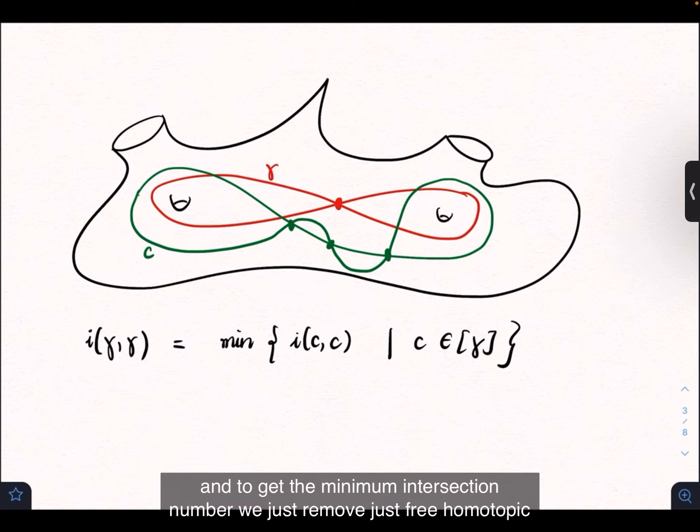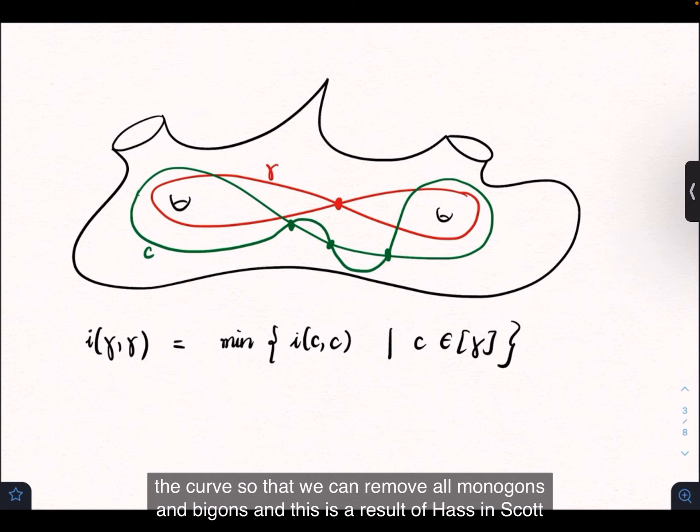To get the minimum intersection number, we free-homotope the curves so that we can remove all monogons and bigons. This is a result of Hass and Scott.